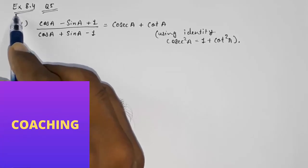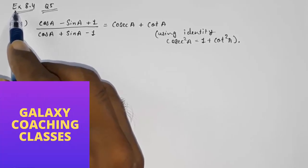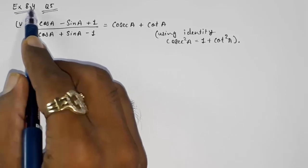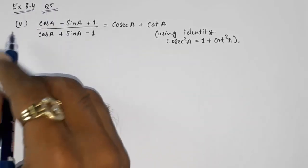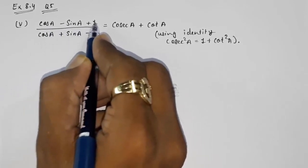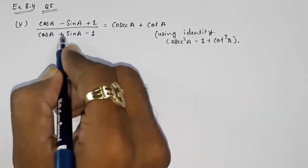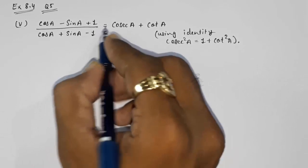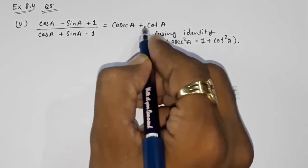Hello friends, today we are going to solve CBSE Class 10 Maths exercise 8.4, question number 5, sub-question 5: (cos A minus sin A plus 1) whole upon (cos A plus sin A minus 1) equals cos A plus cot A.